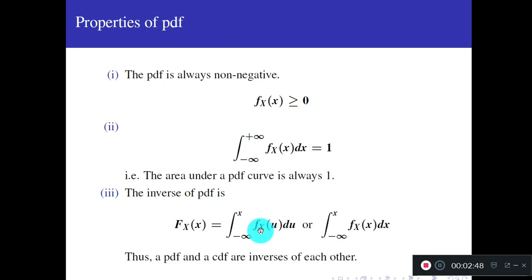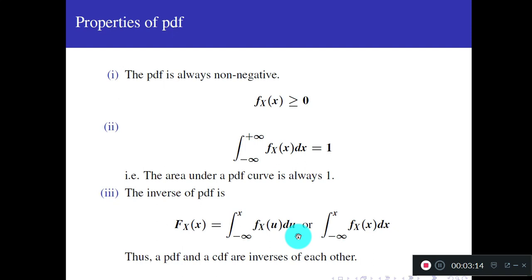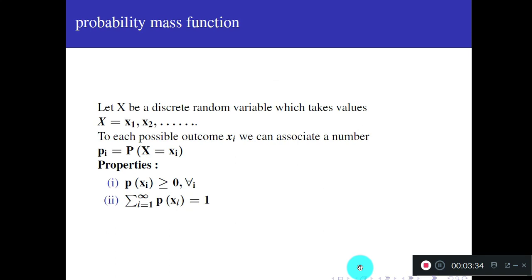In the CDF formula, we integrate with respect to u and substitute the upper limit as u = x at the end. This is the relationship between PDF and CDF: the derivative of CDF is PDF, and the integral of PDF is CDF. So PDF and CDF are inverses of each other. Just remember these properties.